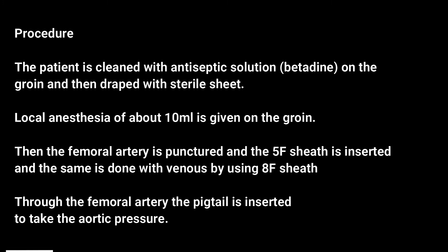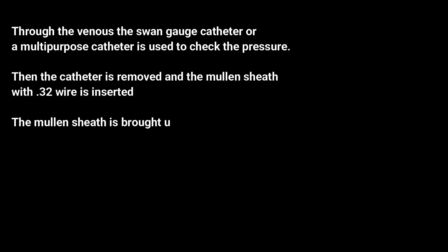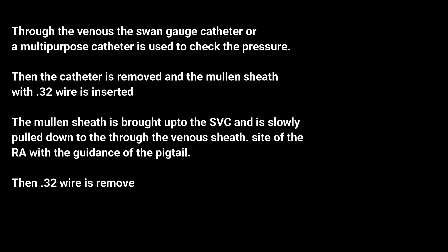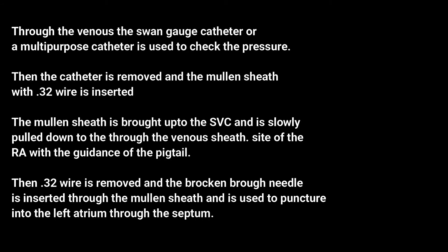Local anesthesia of about 10 milliliters is given on the groin. The femoral artery is punctured and a 5F sheath is inserted. The same is done venously using an 8F sheath. Through the femoral artery, the pigtail catheter is inserted to take the aortic pressure. Through the venous sheath, a Swan-Ganz catheter or multipurpose catheter is used to check the pressure.